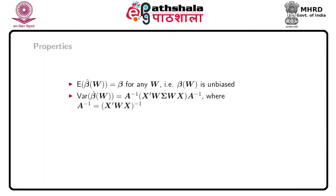What are the properties of weighted least squares? The first property is that if we take the expectation of β̂(W), it leads to β — that is, weighted least squares is unbiased. Specifically, E[β̂(W)] = (XᵀWX)⁻¹ XᵀW E[Y], and substituting E[Y] = Xβ, the terms cancel and we are left with β. So weighted least squares yields an unbiased estimate.